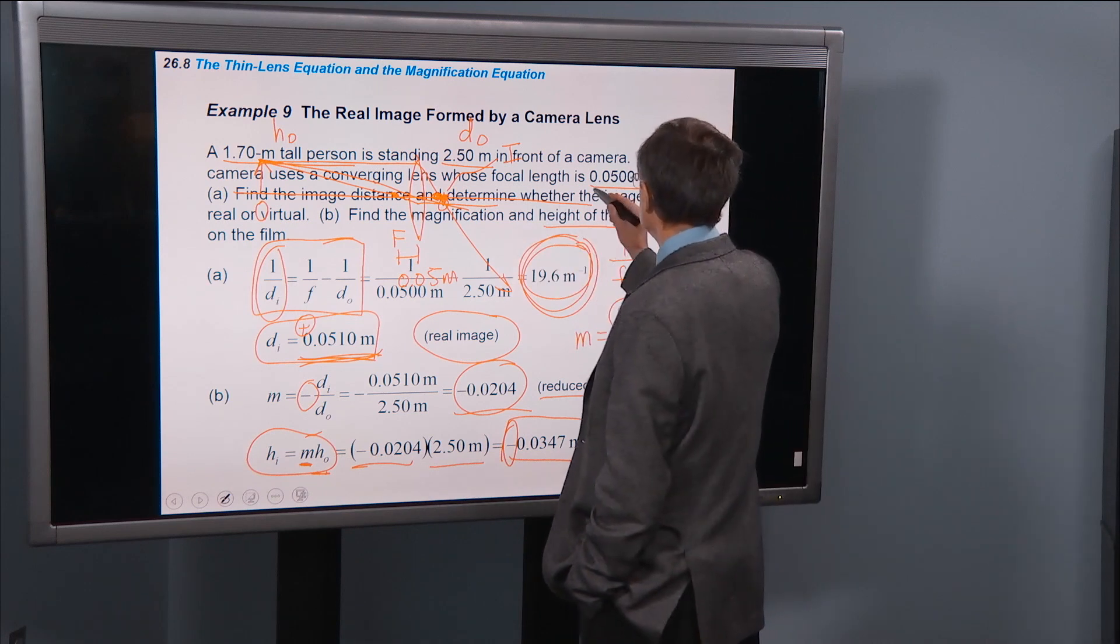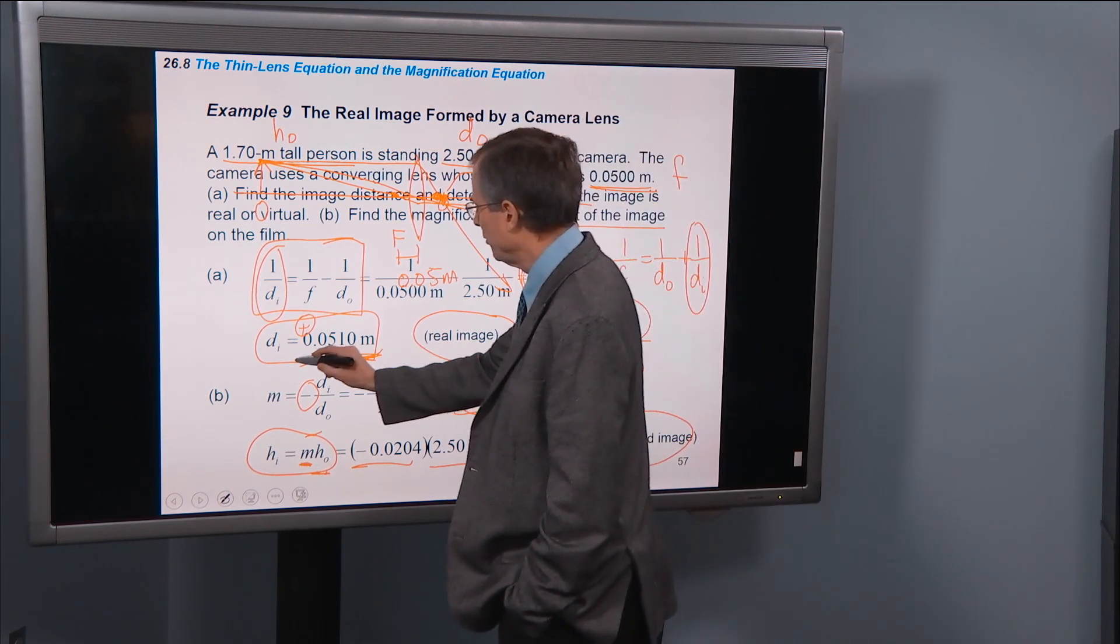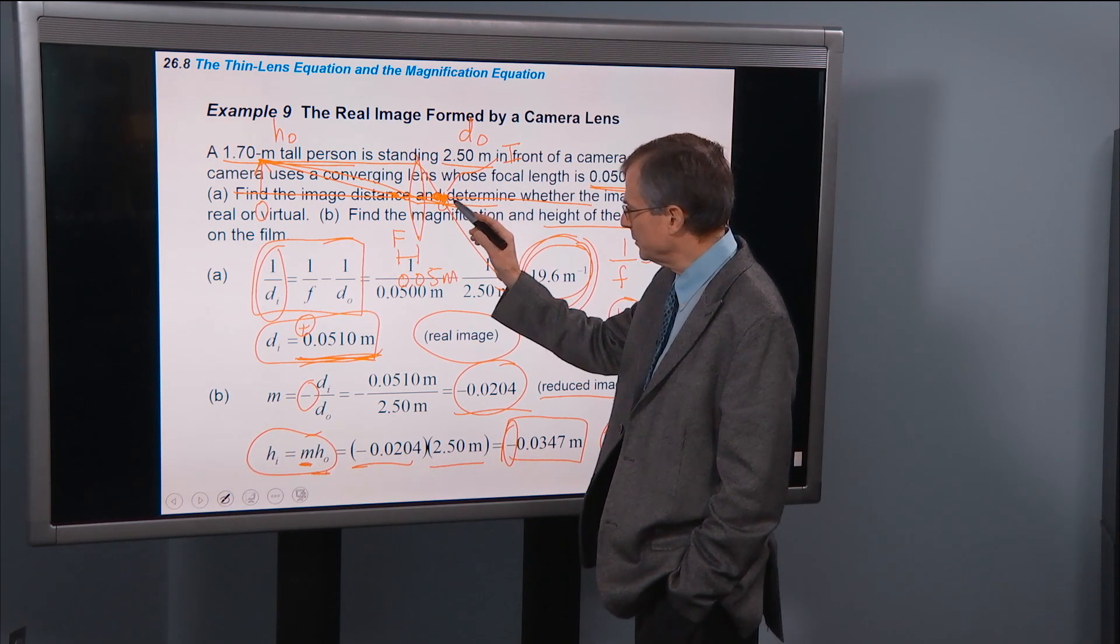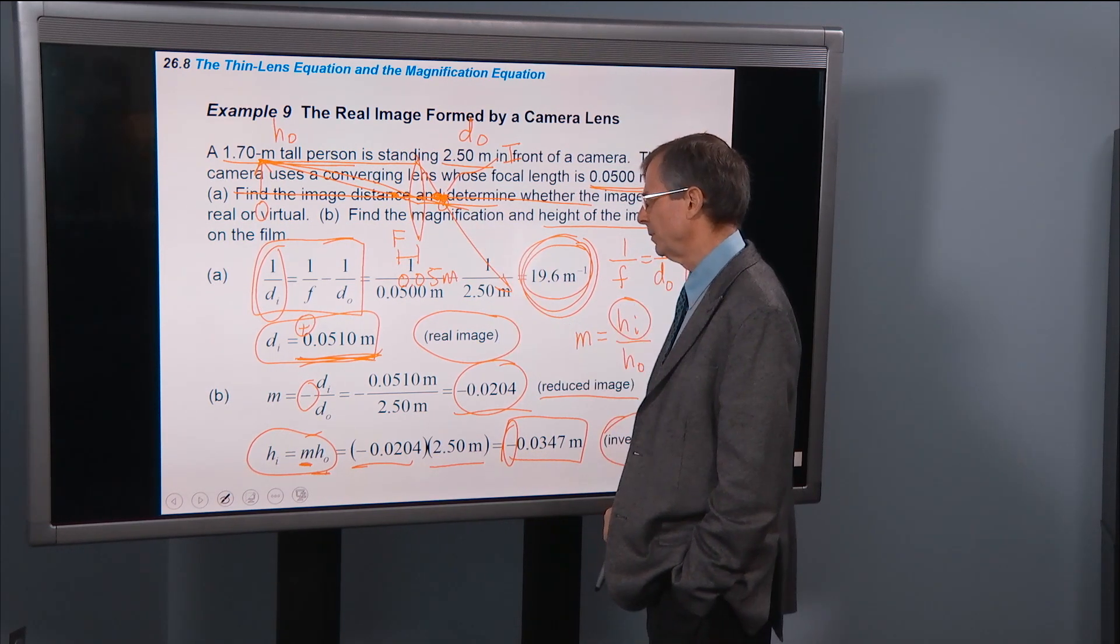The image distance is about 0.05. It's just a little beyond the focal point. The focal point is 0.05. This is 0.051. Just as we've seen in this diagram. The focal point was here. The image was just a little bit outside that focal point.